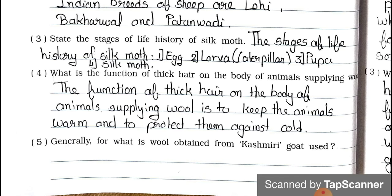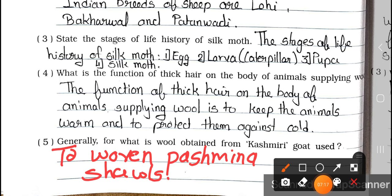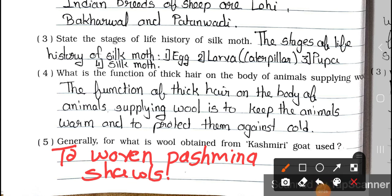Question 4: What is the function of thick hair on the body of animals supplying wool? Answer: The function of thick hair on the body of animals supplying wool is to keep the animals warm and to protect them against cold. Question 5: Generally, for what is wool obtained from Kashmiri goat used? Answer: The wool obtained from Kashmiri goat is used to weave Pashmina shawls.